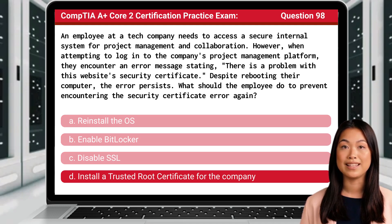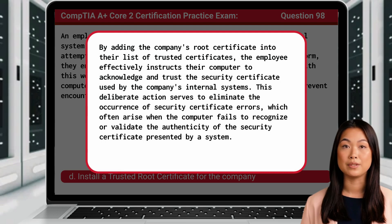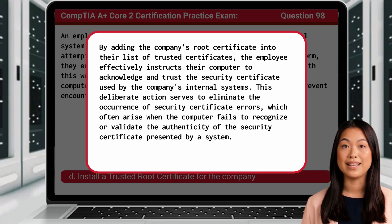The answer is D: Install a trusted root certificate for the company. By adding the company's root certificate into their list of trusted certificates, the employee effectively instructs their computer to acknowledge and trust the security certificate used by the company's internal systems. This deliberate action serves to eliminate the occurrence of security certificate errors, which often arise when the computer fails to recognize or validate the authenticity of the security certificate presented by a system.